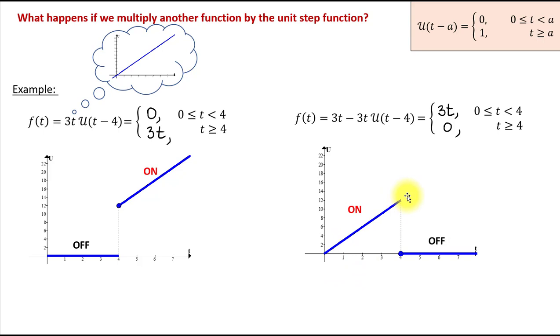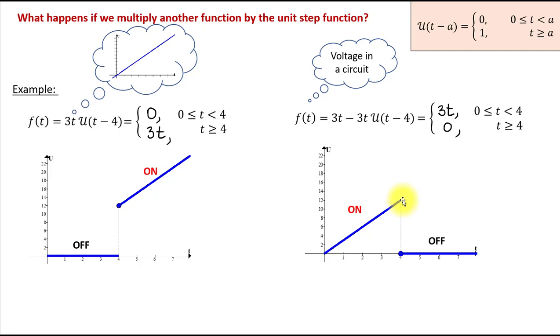Comparing these two examples side by side, we can see that the unit step function can be used to either turn on or turn off another function. That makes the unit step function very useful in many applications. For instance, the second example can model voltage in a circuit being turned off at a certain value of t. In general, applications of the unit step function can be found in physical sciences, engineering, and computer science.